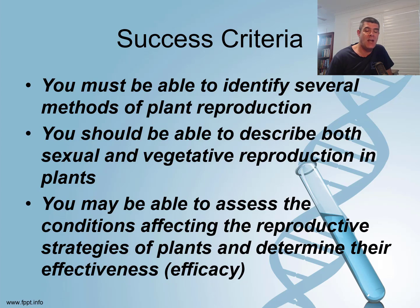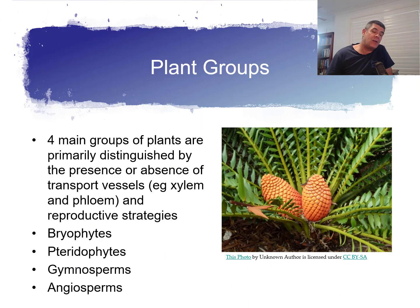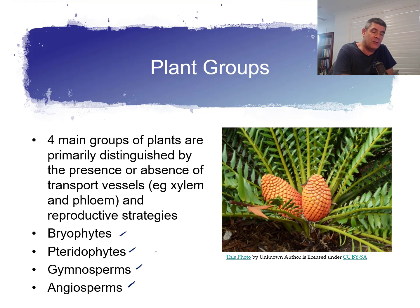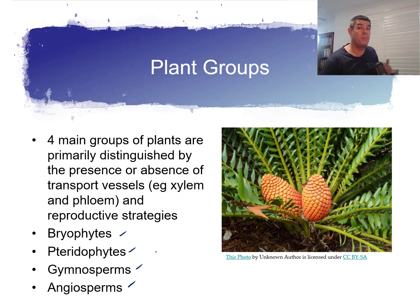We also want to be able to assess the conditions that affect the reproductive strategies of plants and determine their efficacy or effectiveness. One of the interesting things about plants is that plant groups are primarily distinguished by one of two things: the presence or absence of transport vessels like xylem and phloem, and also by their reproductive strategies. In this particular video, we'll focus in on four important plant groups, distinguished primarily by their reproductive strategies.